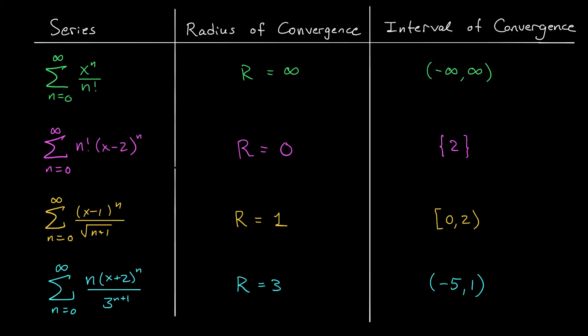Here's a quick summary of the examples we've seen. In the first case, the power series converged for every x in (−∞, ∞), giving radius of convergence infinity. In the second example, the power series converged only at its center x = 2, giving radius of convergence zero. In our third and fourth examples, the radius of convergence was positive but finite, and we had to check the endpoints — the interval of convergence could be open, closed, or half-open depending on the results.